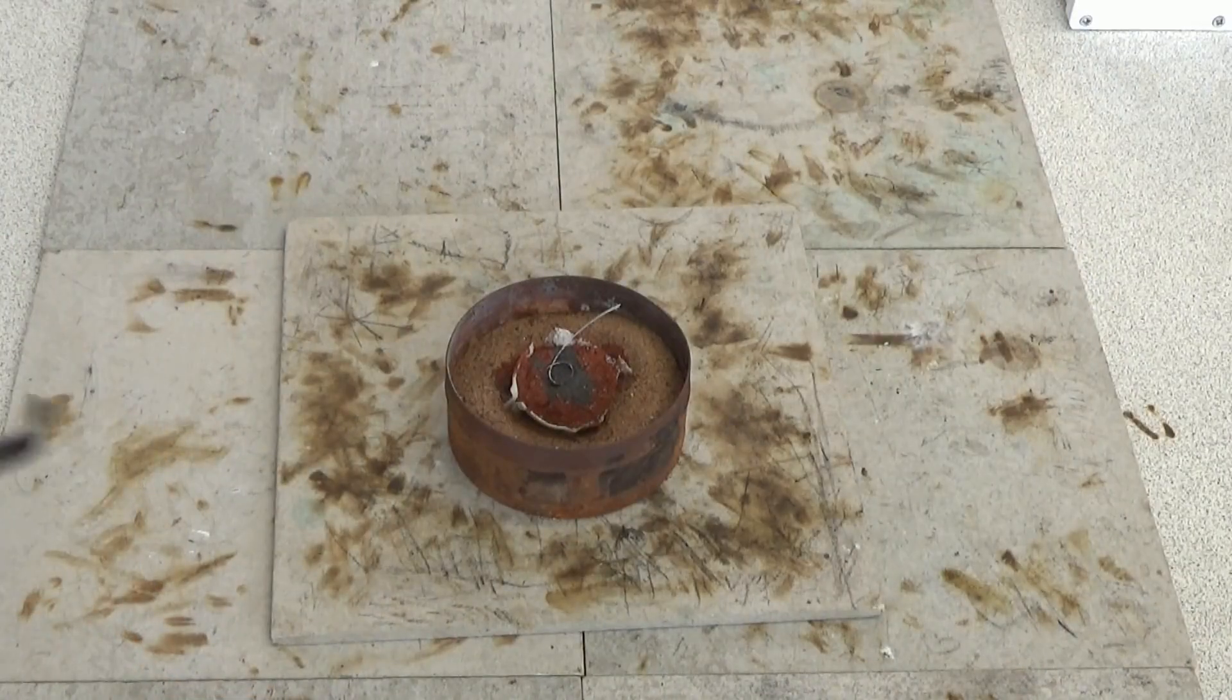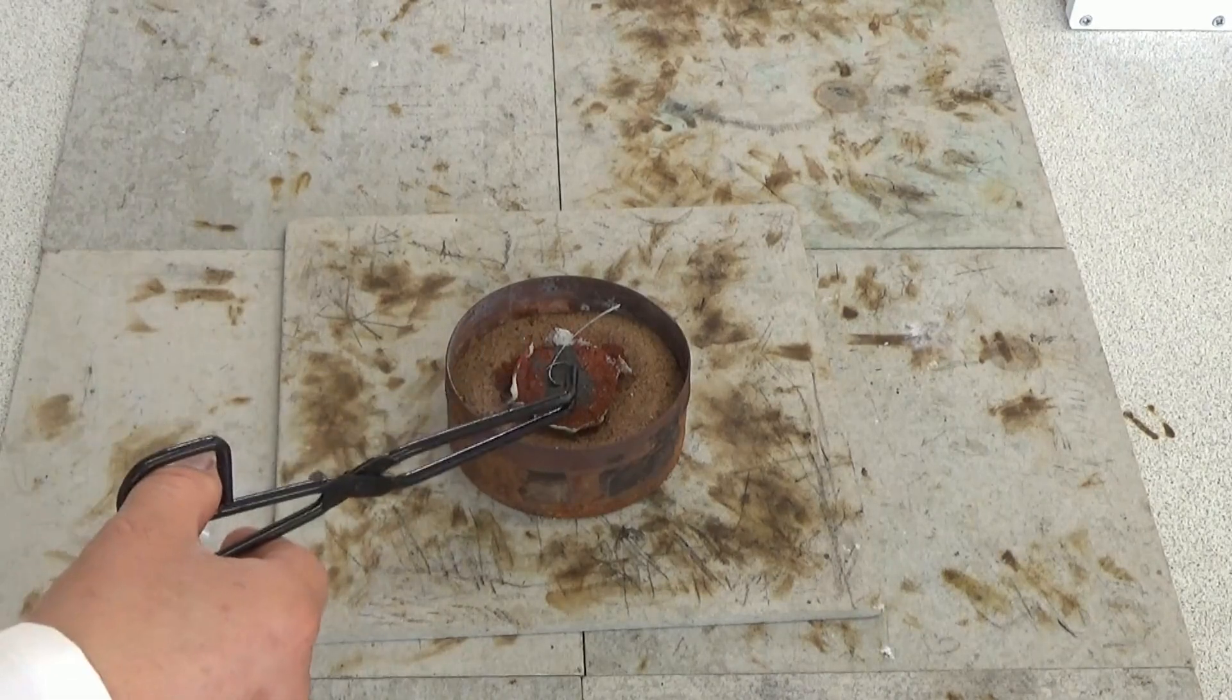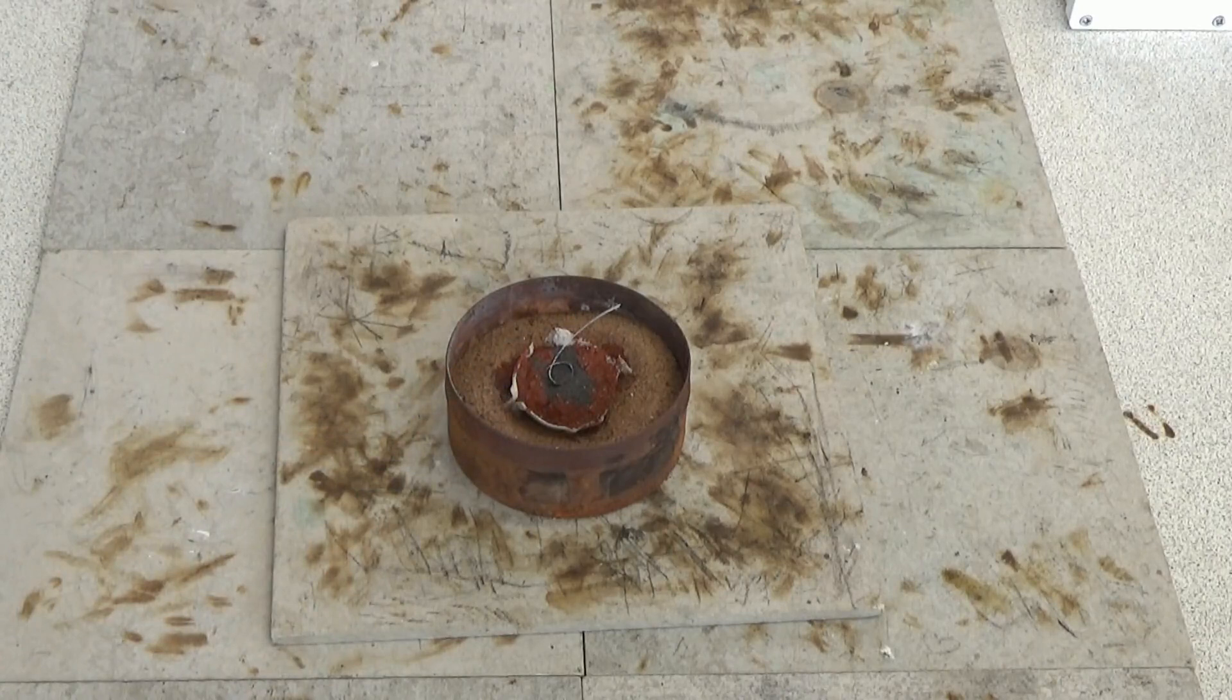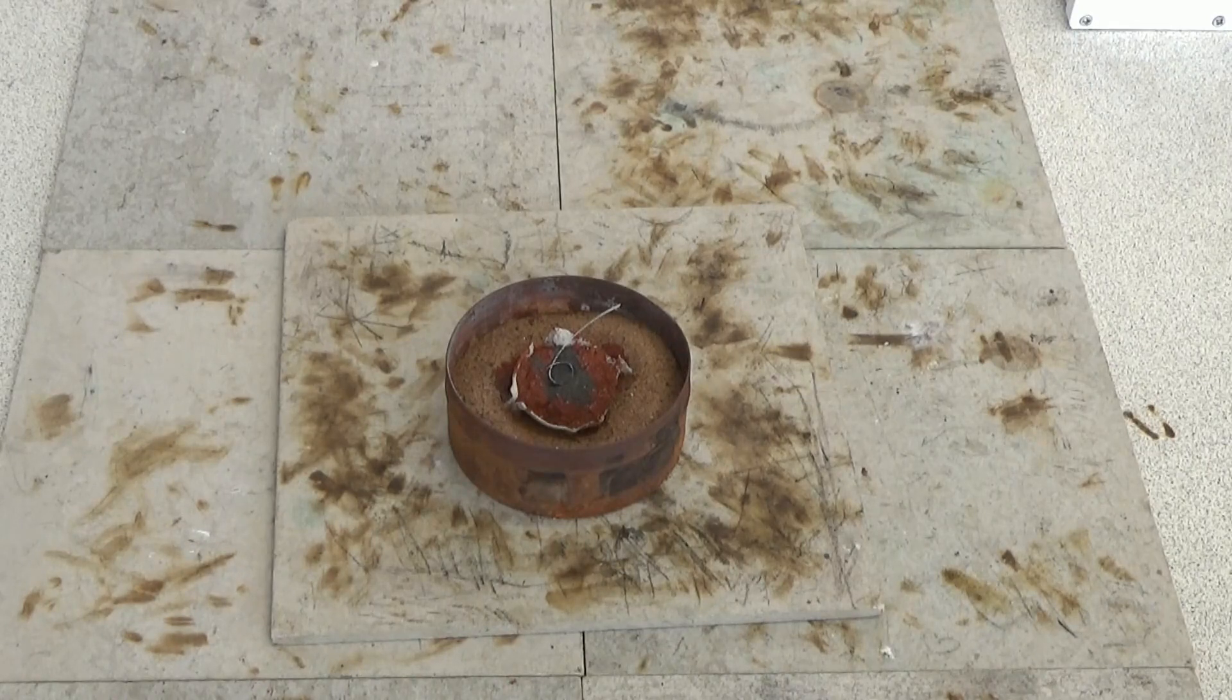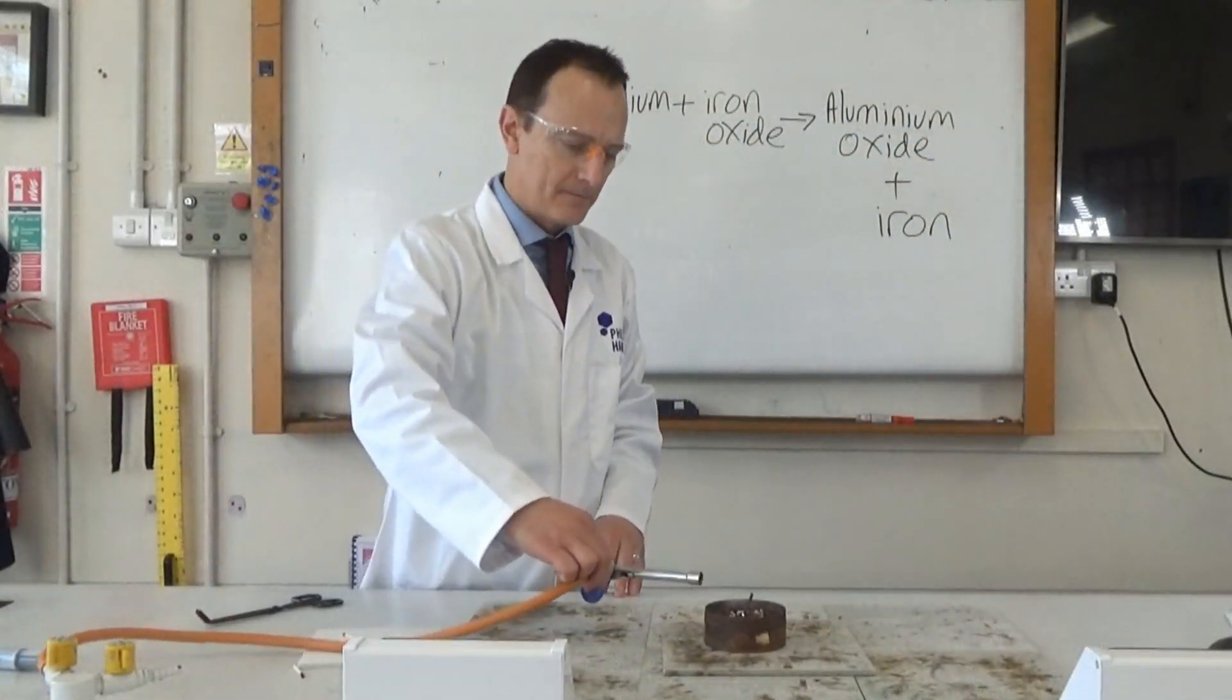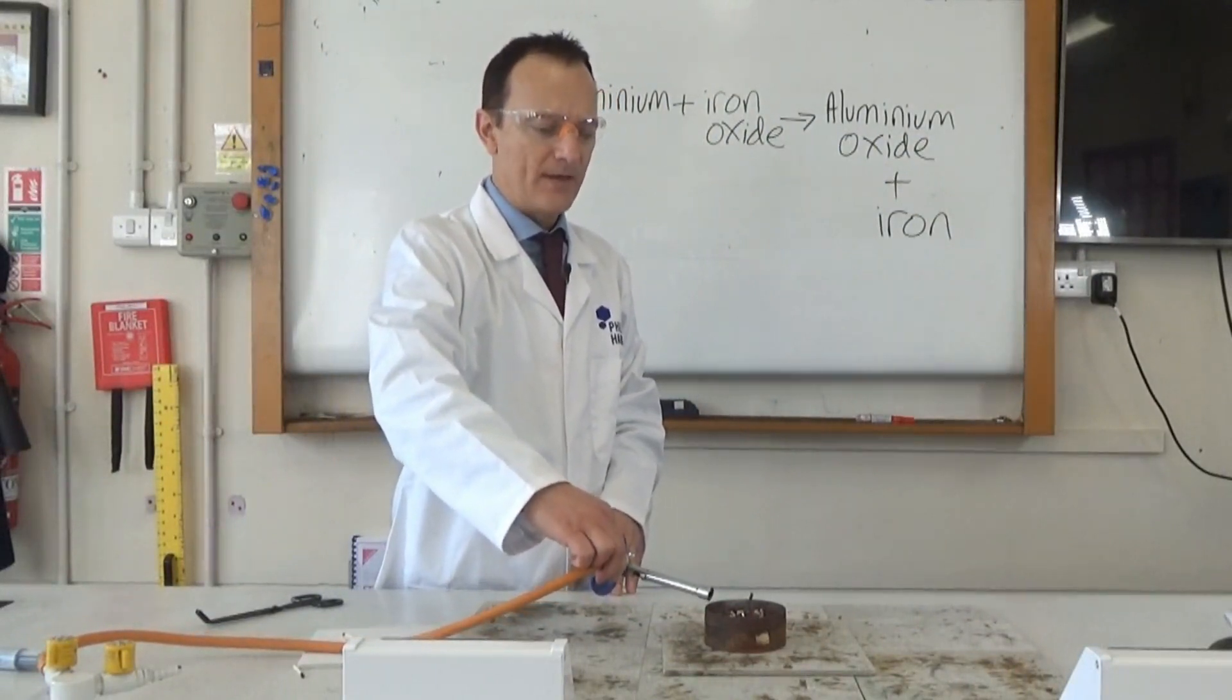This is what the reactants look like. The red powder is the iron oxide. The grey powder is the aluminium powder. And you'll notice we've got a fuse here made out of magnesium ribbon. That's going to provide the activation energy to get the reaction started. So the first thing we'll see when it reacts is the bright white light of the magnesium ribbon. And that's providing the energy to start the rest of the displacement reaction. So here we go. We'll light the magnesium ribbon. Then I need to very quickly get out of the way because it's quite a vigorous reaction.